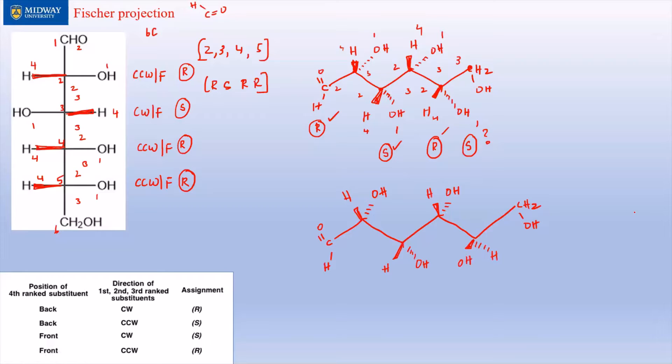And there we go folks, the correct line structure or three-dimensional structure for glucose, because now we have RSRR - this is R, S, R, and R. That's what we want, and that's it.